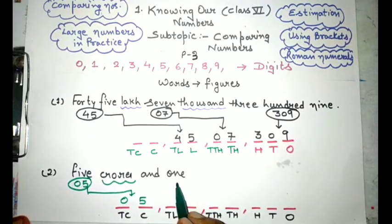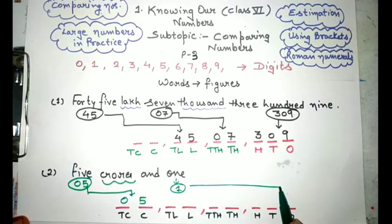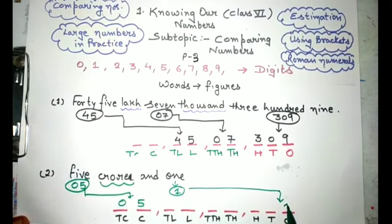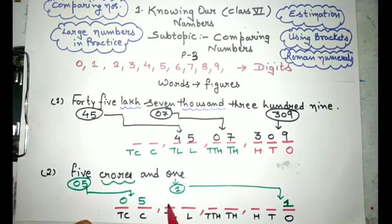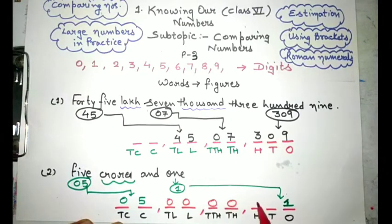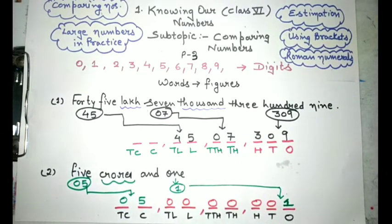After that we find that only 1 is given which will go at the one's place. It means what about the other places? There we have to place the 0 digit. So the number will become 5,00,00,001.